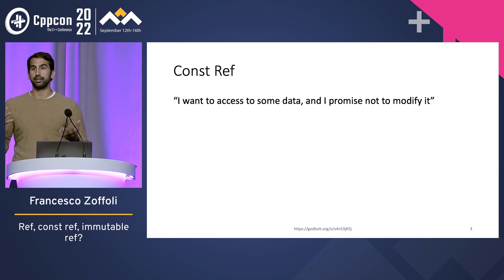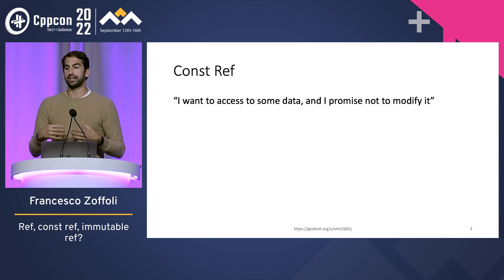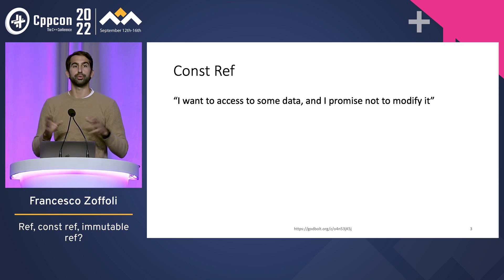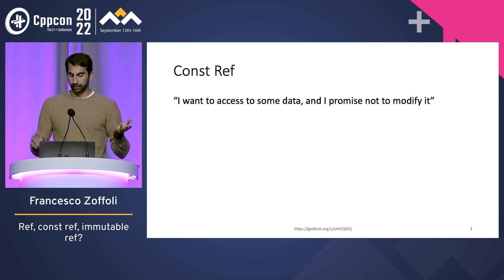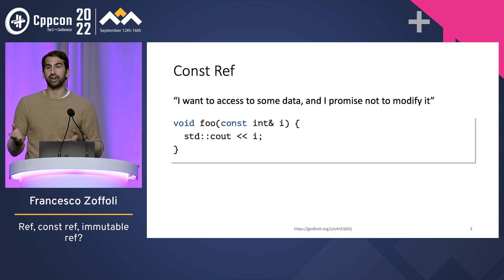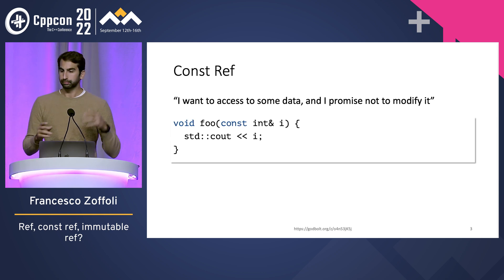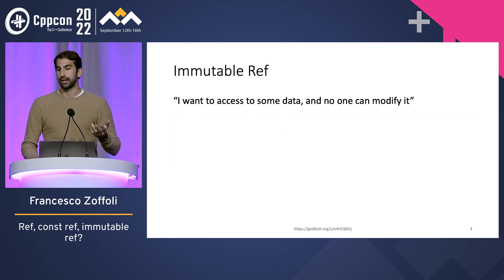Then your contract changes. You want some data and you want to promise not to modify it — super easy again. You get a const ref, it's your read-only view on the data, you can access it, you cannot modify it.